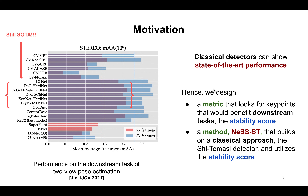Building on these two observations, in our work we design a metric that looks for keypoints that are good from the standpoint of downstream tasks, which we call the stability score — the first contribution of our work. Utilizing this metric, we build a learned self-supervised keypoint detector that relies on a classical approach, the Shi-Tomasi detector. This is the second contribution of our work.